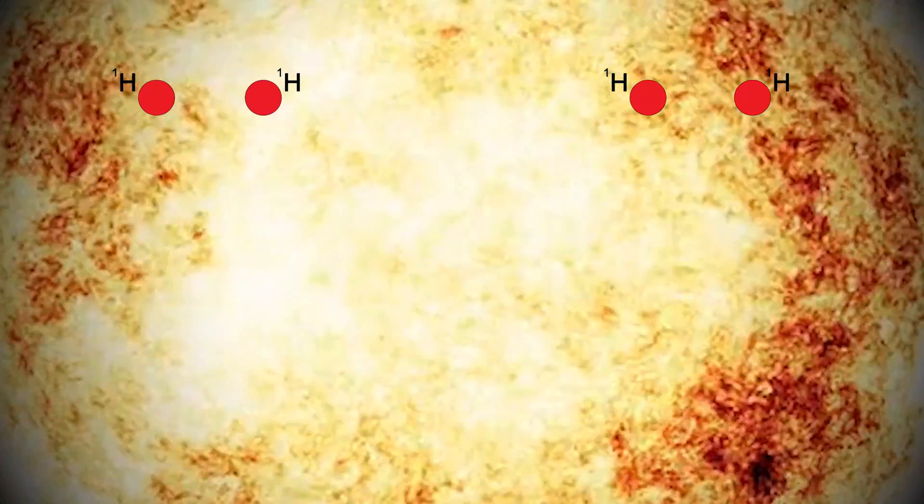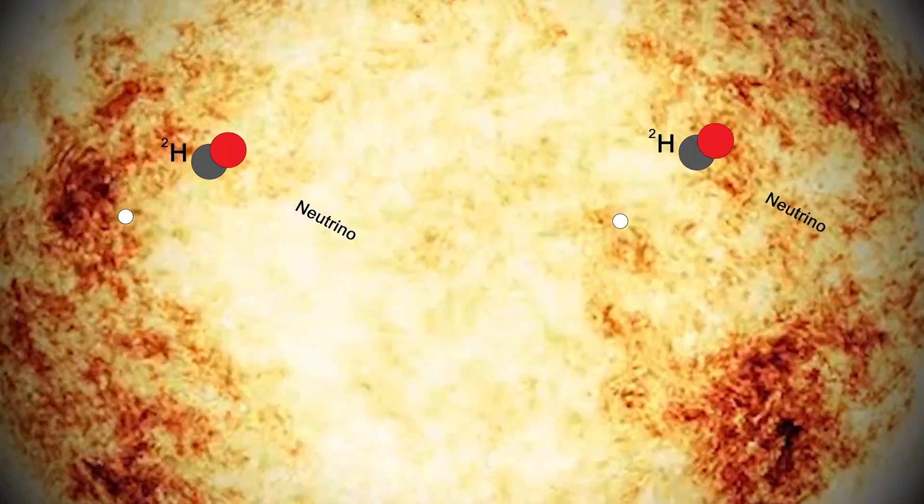Our sun uses proton-proton fusion. It begins with hydrogen atoms and it ends with helium-4. This process involves several steps. First, two protons fuse to form a deuterium, among other things.